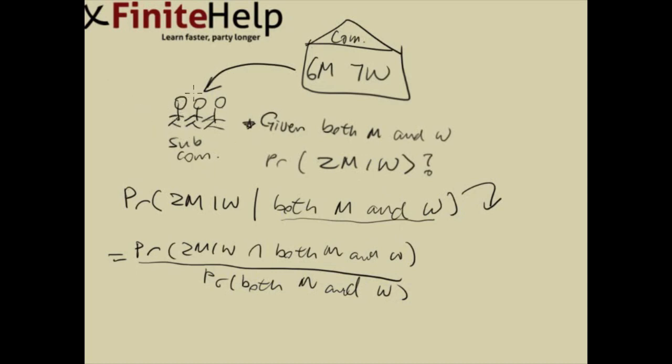We're choosing a subcommittee, and since the subcommittee doesn't have any particular roles or tasks, it doesn't matter the order of which these people are chosen. One person chosen can't fill two spots. We're choosing three people. So this is without replacement, which makes this a combination.